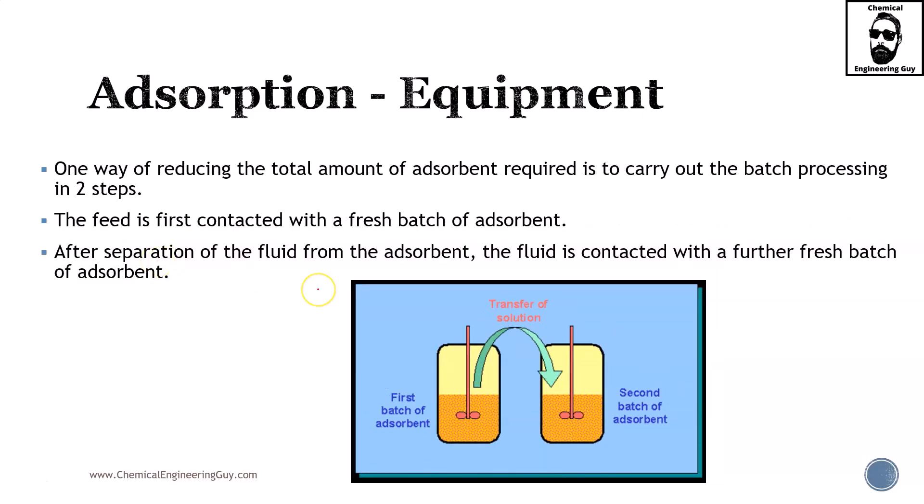One way of reducing the total amount of adsorbent required is to carry out the batch processing in two steps. The feed is first contacted with a fresh batch of adsorbent. After separation of the fluid from the adsorbent, the fluid is then contacted with a further fresh batch. What we're doing is encountering or favoring the equilibrium conditions.